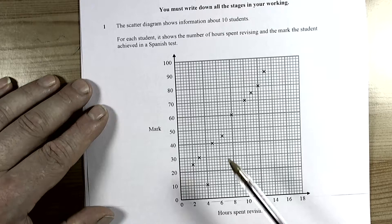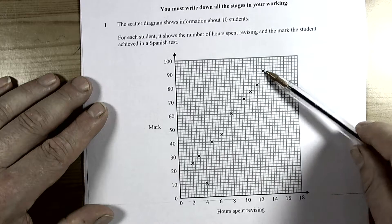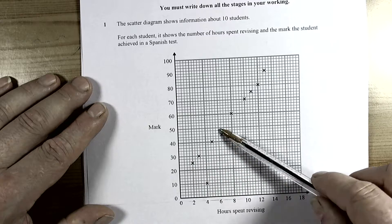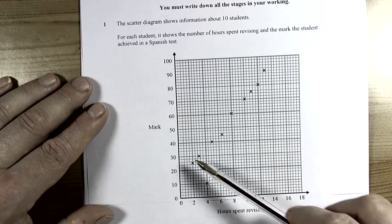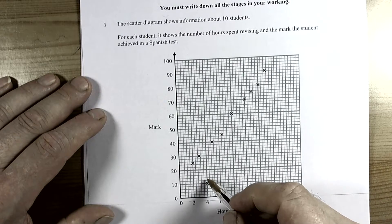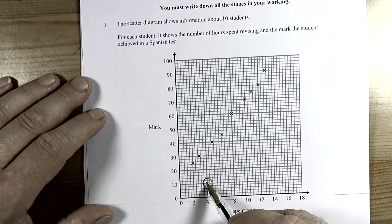So this question starts off by asking you to find the outlier. Well if we look at the trend of the crosses or the correlation of the crosses, we can see that they're generally going upwards which is a positive correlation - as one increases the other increases - and this one is out of place. So this is the outlier and it says write down the coordinates, so 4,10.